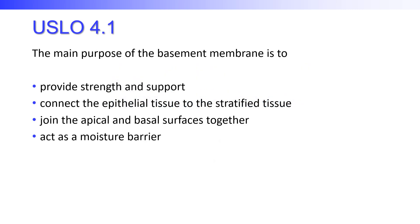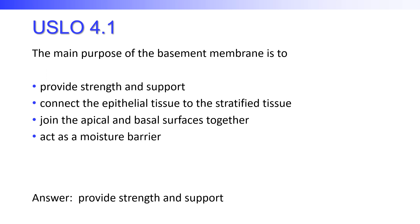Our first question says the main purpose of the basement membrane is to: provide strength and support, connect the epithelial tissue to the stratified tissue, join the apical and basal surfaces together, or act as a moisture barrier. The answer is that it provides strength and support. The basement membrane is the membrane that all of the cells making up a tissue are connected to, providing support and strength to the tissue.